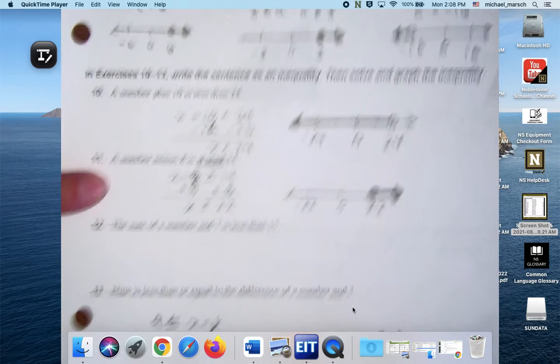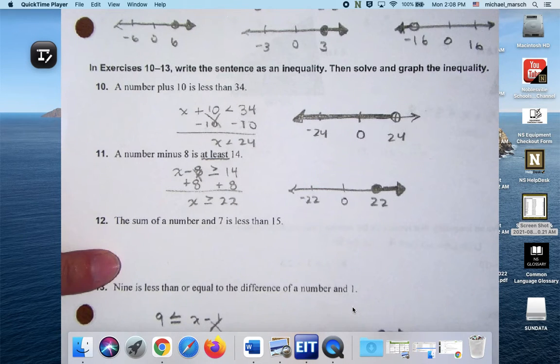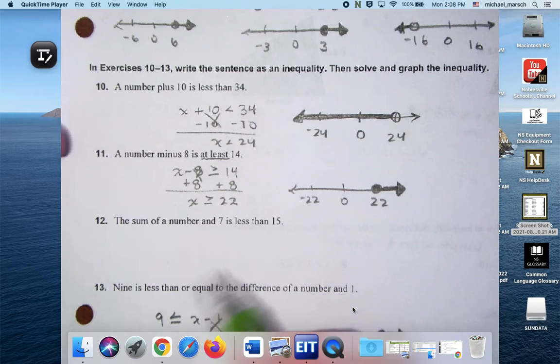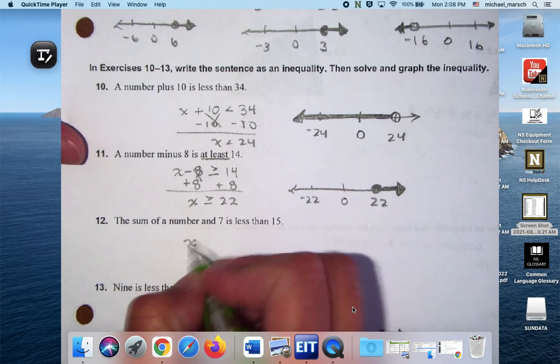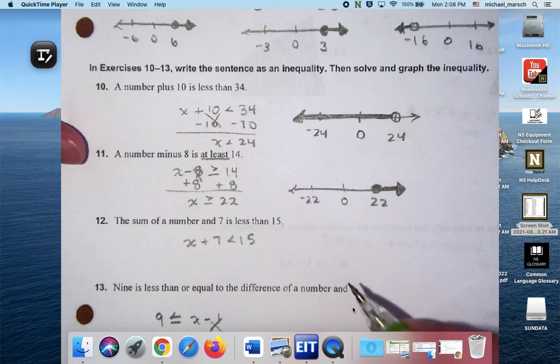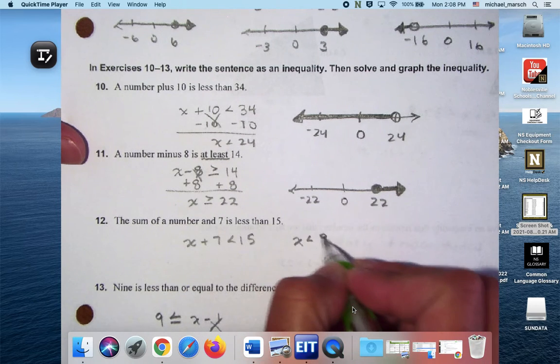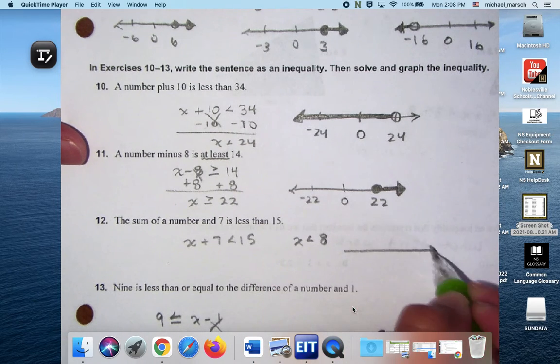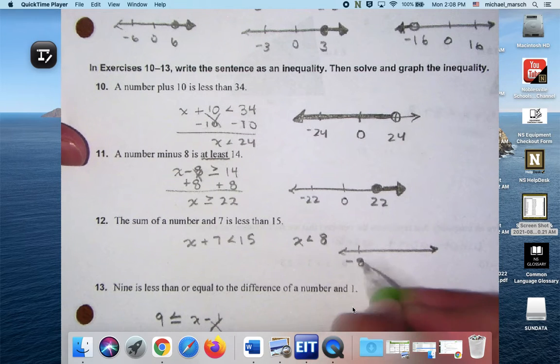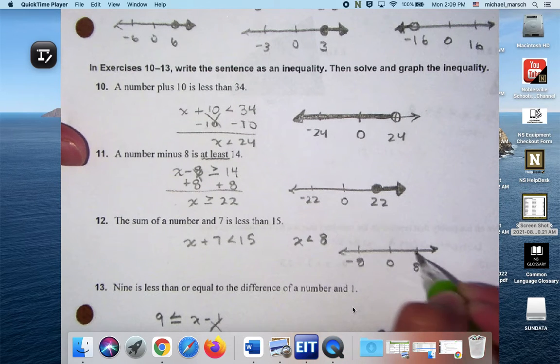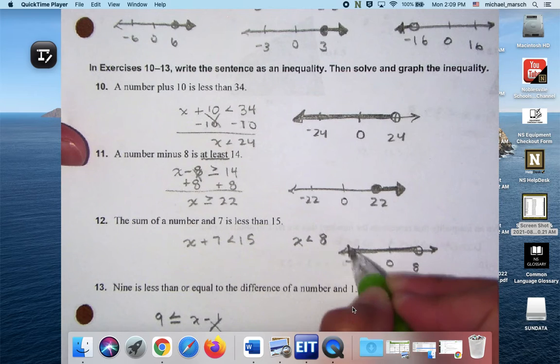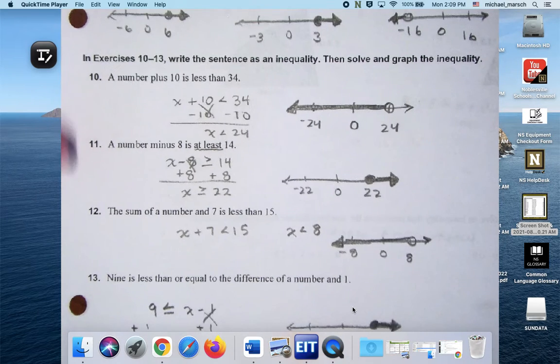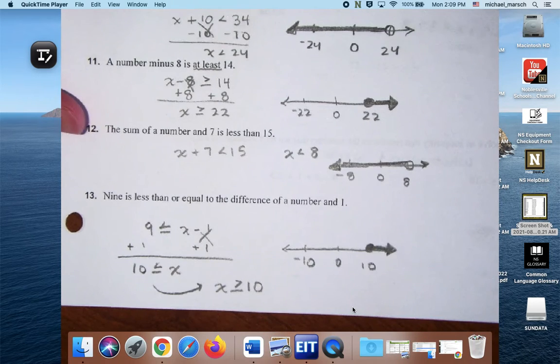All right, we did 10 and 11 together on Friday. So for number 12, the sum of a number in 7 is less than 15, so X plus 7 is less than 15. So then you would get X is less than 8. Open circle and to the left. And then we also did number 13 together on Friday.